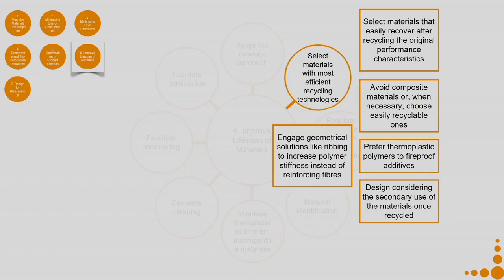These are criteria for which you have to make a conscious decision whether they are applicable in your context. Design considering the secondary use of the material once recycled — in most product design situations, even if you design for recycling, you might not think of what the recycled material can be used for. If you know it can be recycled but do not know what it can be recycled into, the whole purpose of recycling often does not succeed properly.